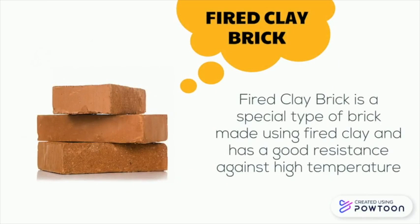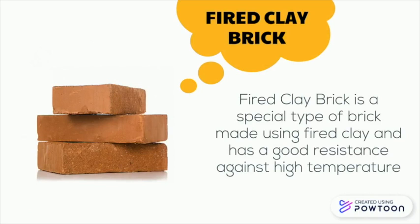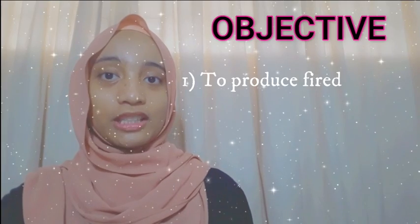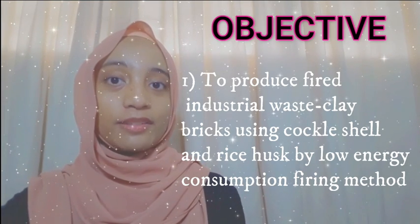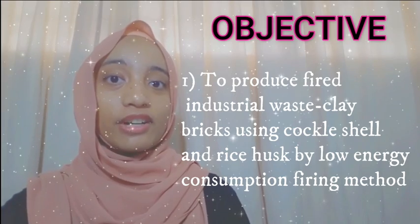Fire clay brick is a special type of brick made using fire clay and has good resistance against high temperature. Fire clay brick contains two major constituents which are silica sand and alumina clay. Silica weight percentage varies from 50% to 60%, while alumina weight percentage is in the range of 20% to 30%. The first objective is to produce fire industrial waste clay brick using coccal shell and rice husks by low energy consumption firing method.